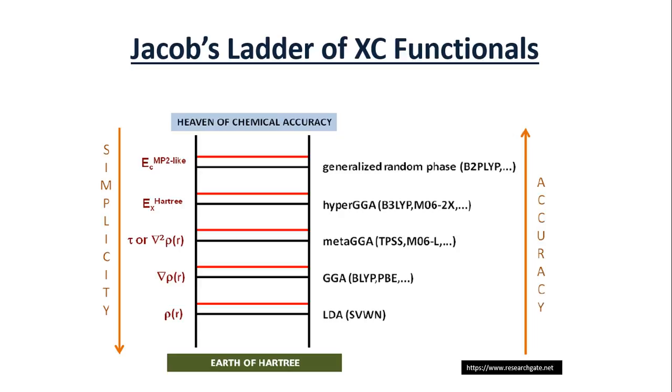This is the Jacob's ladder of XC functionals. You know what a Jacob ladder is? It is, you can do some Wikipedia, so it actually connects from earth to heaven. So now our earth is Hartree approximation which is the simplest, and the heaven of chemical accuracy we want to reach practically. So in the left hand side you have the simplicity increasing downwards, and in the right hand side the accuracy is increasing upwards.